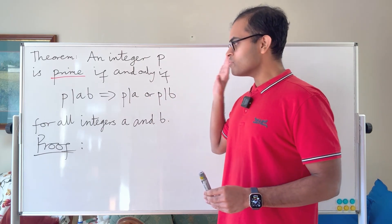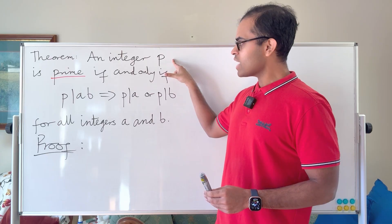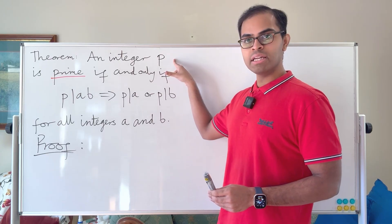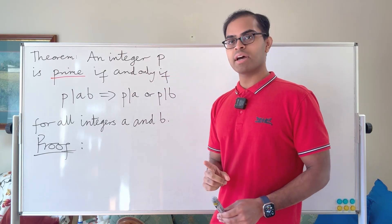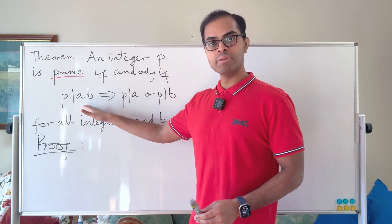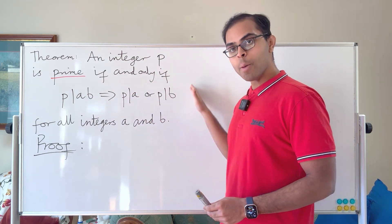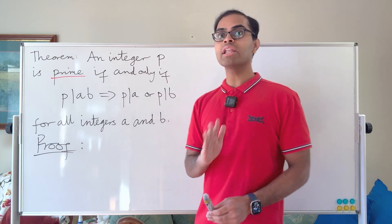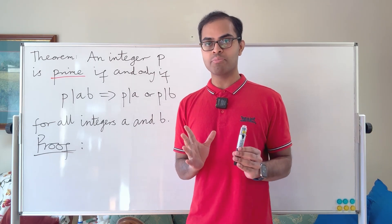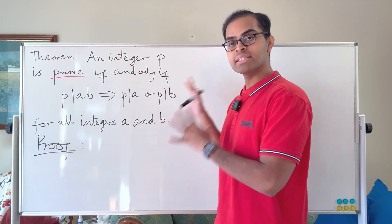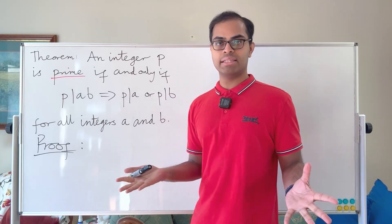We're going to do an introduction to rigorous mathematical proofs in number theory. We're going to prove that an integer p is a prime number if and only if the following condition is satisfied: that p is a factor of ab implies p is a factor of a or p is a factor of b, for all integers a and b. This is a characterization of prime numbers — we're going to prove it's the same as saying the only factors of p are one and itself.